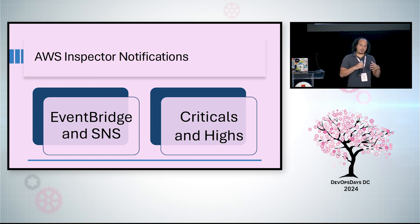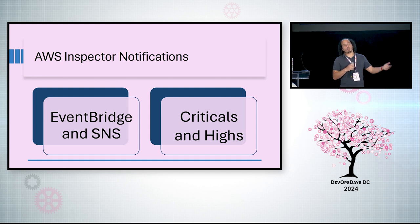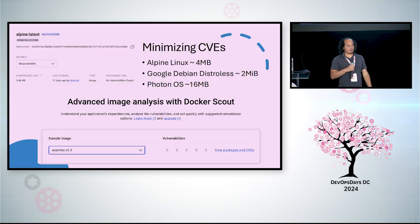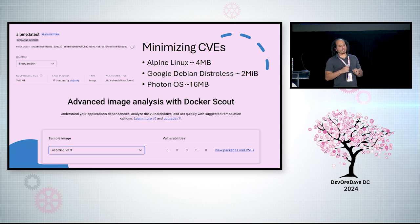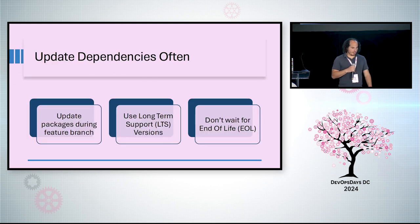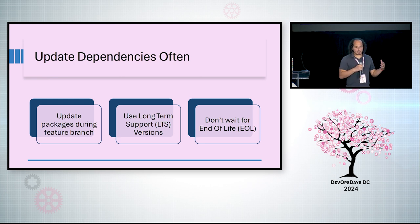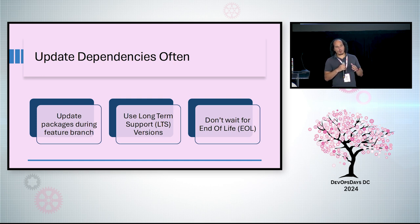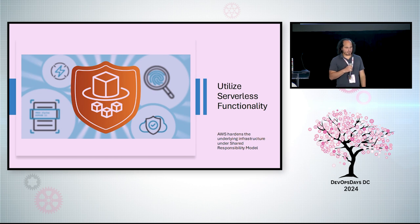Inspector offers continuous scanning, and we have leveraged EventBridge and SNS to notify us whenever they detect a critical or high CVE in our production image. To minimize the CVEs in our production images, the easiest step we took is using the smallest base image. We've gone with Alpine Linux — you can see there's zero CVEs there. You also want to update your dependencies often, use the LTS versions, and don't wait for end-of-life to upgrade.